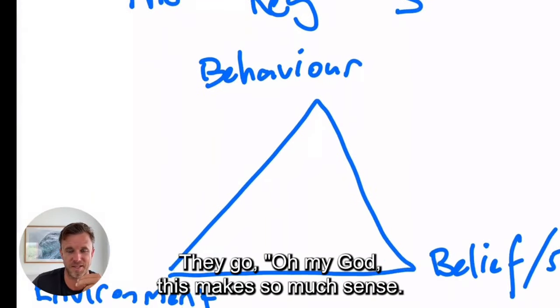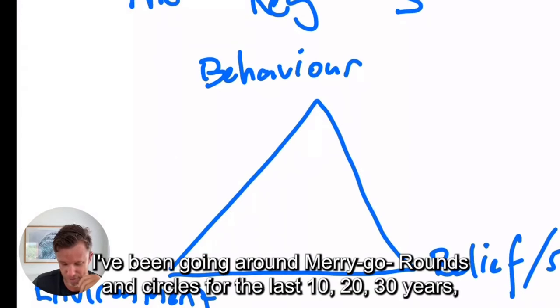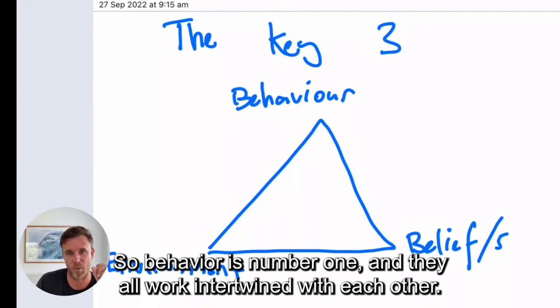The slowest quick fix that will never work is you trying to find someone or something to fix you. And frankly, it just doesn't work. We've seen it time and time again. That's why people come to us in the end. They go, oh my God, this makes so much sense. I've been going around in circles for the last 10, 20, 30 years. So behavior is number one and they all work intertwined with each other.